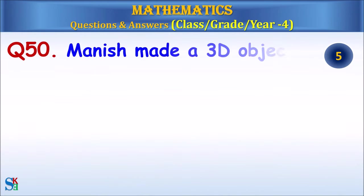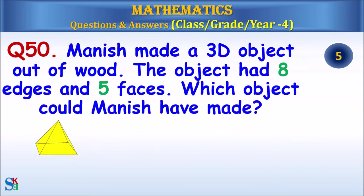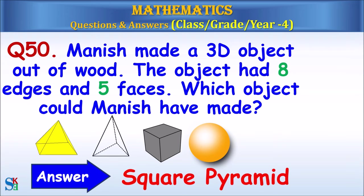Question 50: Which object could Madish have made? The answer is the square pyramid.